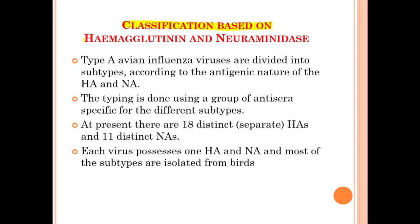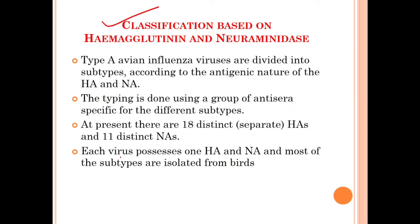Now we will discuss the classification of type A avian influenza virus based on hemagglutinin and neuraminidase. Type A avian influenza viruses are divided into subtypes according to the antigenic nature of the HA and NA surface spikes. The typing is done using a group of antisera specific for different subtypes. At present, there are about 18 distinct hemagglutinins and 11 distinct neuraminidases, and each virus possesses one HA and one NA. Most subtypes are isolated from birds.